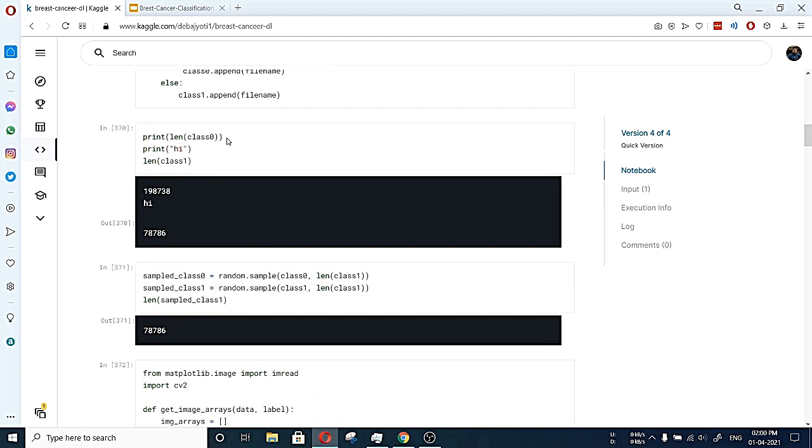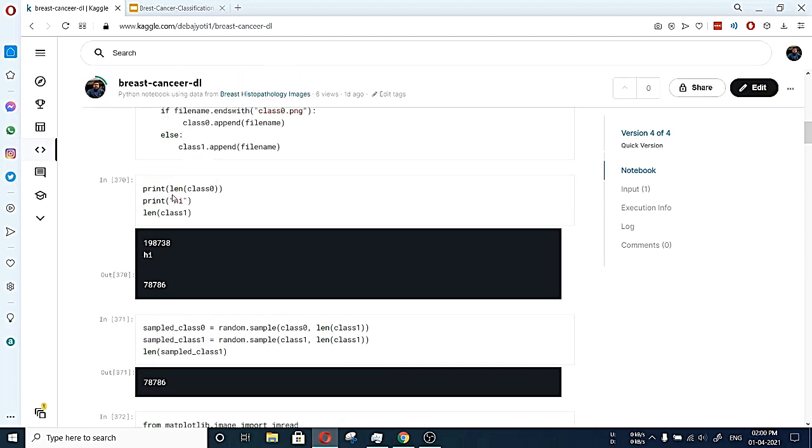After the labeling was done, the number of class 0 images was 198,738 and class 1 images were 78,786. Basically, class 0 means it is non-invasive and class 1 means it is invasive, that is IDC positive images.